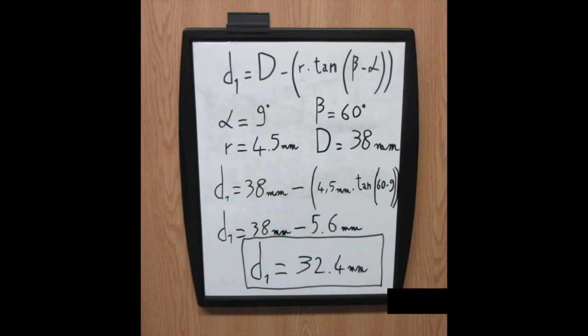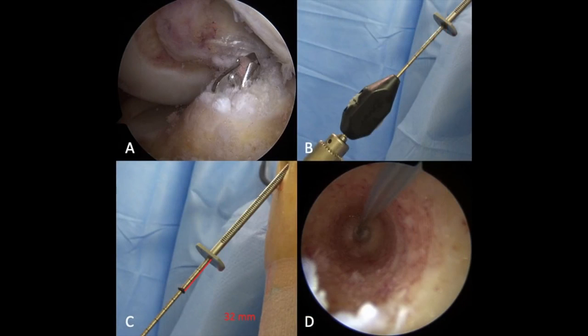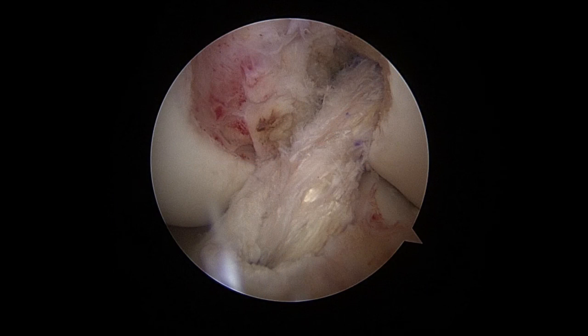Entering all these measurements into our formula yields a safe drilling length of 32.4 millimeters. We now drill our flip cutter 3 up into the ACL footprint and open it to 9 millimeters. The rubber grommet is placed all the way flush in the back of the tibial drill guide as seen in picture B, and we then retro drill to our safe drilling length as seen in picture C. This yields a very nice close socket tibial tunnel as seen in picture D. Finally, we pass our ACL graft up into the knee and tension the graft with the knee in full extension.